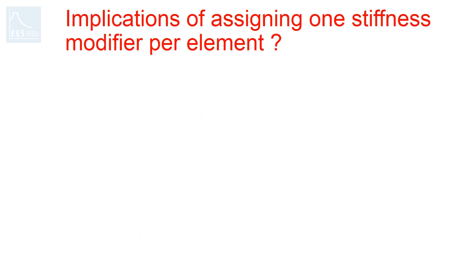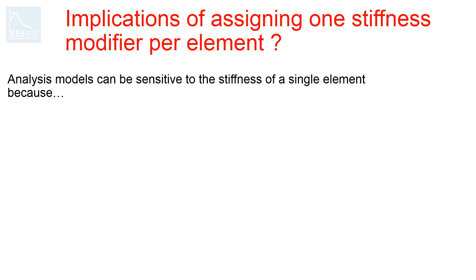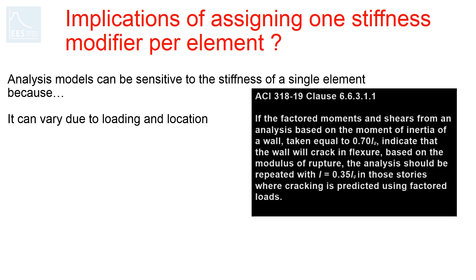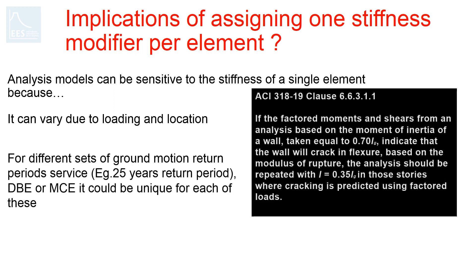The implications of this are significant. Analysis models can be sensitive to the stiffness of a single element because it can vary due to loading and location. For example, stiffness modifiers for RC walls in ACI 318 have different provisions for cracked and uncracked walls. ACI 318-19 clause 6.6.3.1.1 states that if factored moments and shears from an analysis based on a moment of inertia of a wall equal to 0.7 Ig indicate that the wall would crack in flexure, the analysis should be repeated with I equals 0.35 Ig in those stories where cracking is predicted using factored loads.